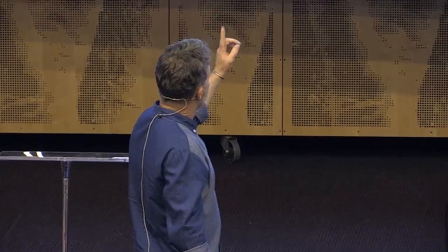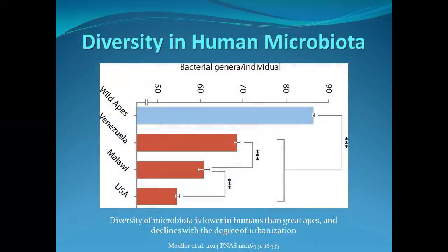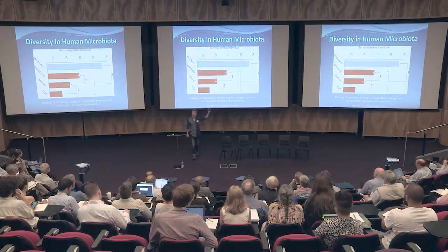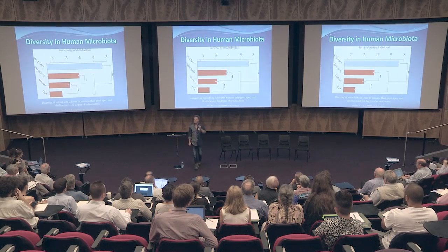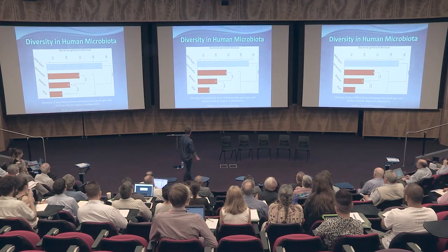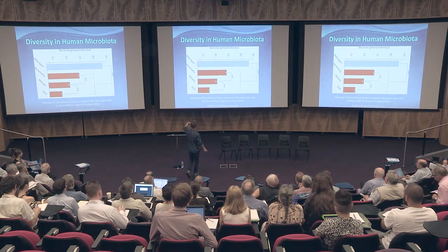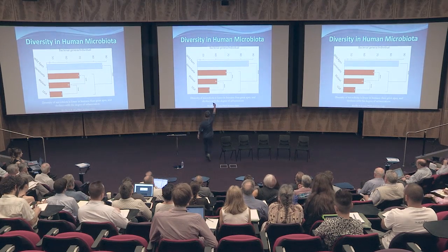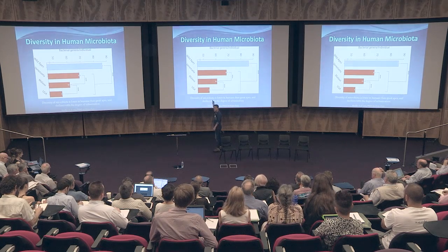There's also evidence that it's lost ancestral diversity. The diversity of bacteria in the gut of great apes is much higher than in the gut of humans. If we look at different human populations, we find a decline in diversity corresponding with degree of urbanisation - subsistence farmers, agriculturalists, and modern US populations all show this decline in the number of organisms.